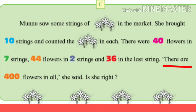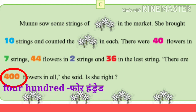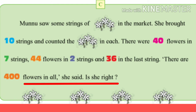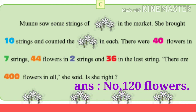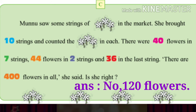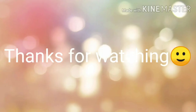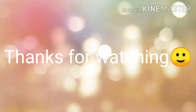There are four hundred flowers in all, she said. Is she right? Answer: No, there are four hundred and twenty flowers in all.